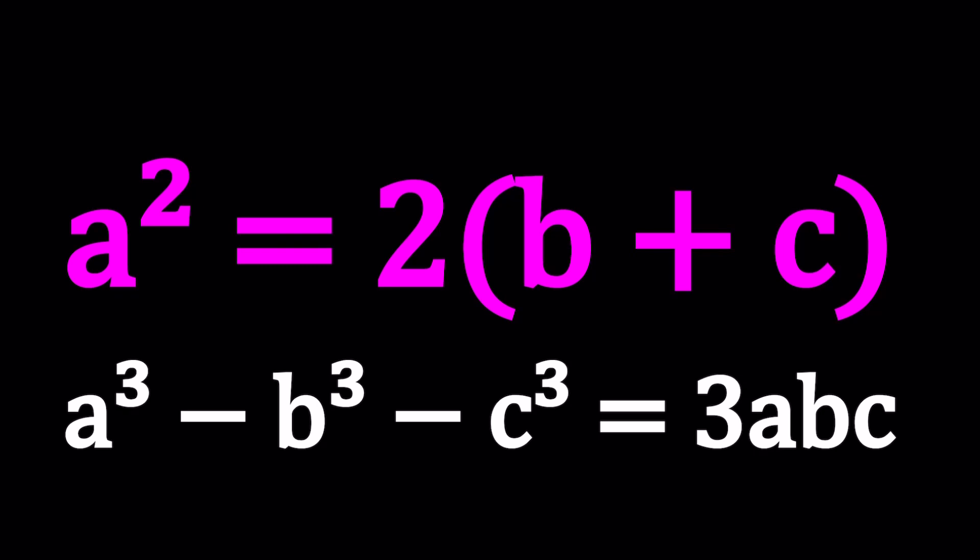Even though I've seen this problem in many other occasions, some math competitions somewhere I can't exactly remember. But anyways, what does Arbalos mean? Arbalos is basically, in geometry, a plane region bounded by three semicircles with three apexes, such that each corner of each semicircle is shared.